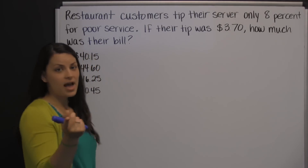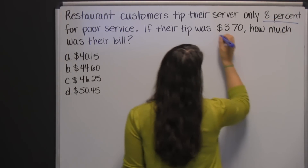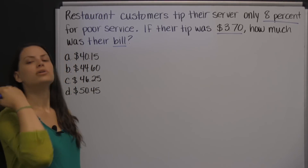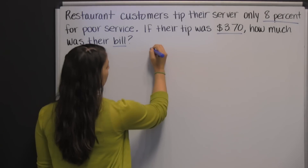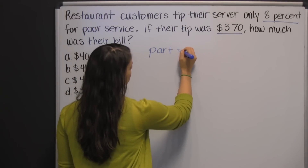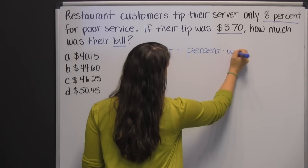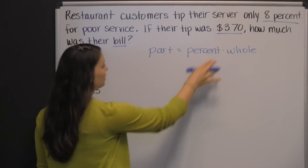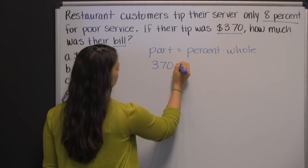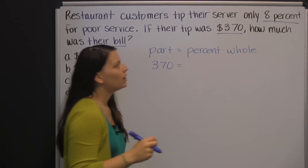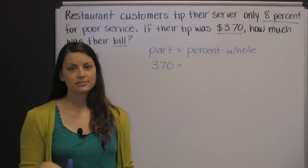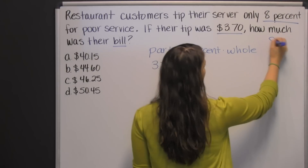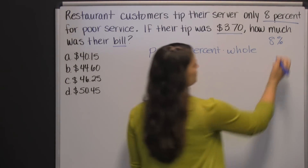Here we have a percent, the tip or part, that's part of a whole. What we're asked to find is the whole. You can use the percent equation — part equals percent times whole — to solve this problem. Your part in this case is the tip: $3.70. The percent is 8%, but we don't do calculations with percents. So you have to change that percent into a decimal or a fraction. Eight percent as a decimal is eight hundredths, 0.08.